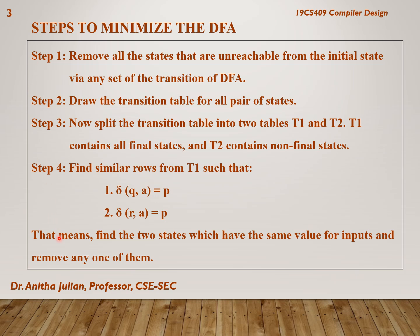In the partitioning method there are 6 steps. In step 1 we will remove all the states that are unreachable from the initial state via any set of transitions of the DFA. In step 2 we will draw the transition table for the obtained DFA. In step 3 we will split the transition table into two tables T1 and T2 — T1 will contain all the final states and T2 will contain all the non-final states. There is also a concept of similar rows: if two transitions over the same input symbol lead to the same output state, they are considered similar rows, and one of the states Q or R can be removed.